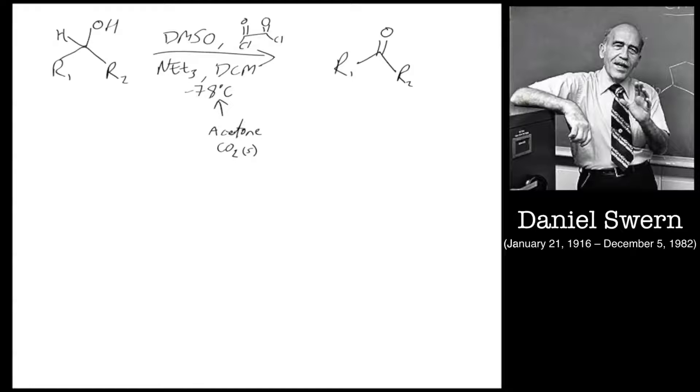Usually put the acetone and the carbon dioxide into a little small dewar and put your flask into that and it will cool down enough. So that's the general reaction for the Swern oxidation.